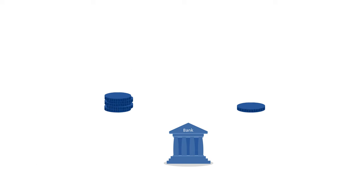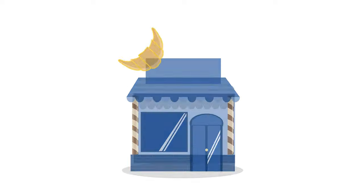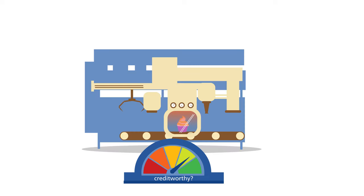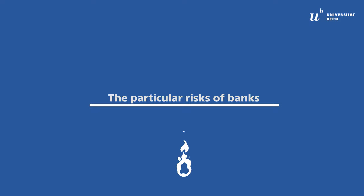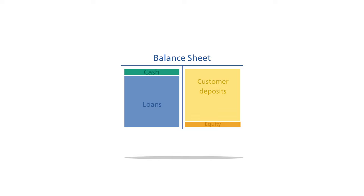The way a bank makes a profit is by paying lower interest rates to savers than the interest rate it charges for lending money. That is known as the interest rate spread and constitutes the foundation of basic banking. The interest rate spread compensates the bank for the costs involved with lending money, such as assessing the creditworthiness of borrowers and their projects. As the chart shows, two things are notably small on a bank balance sheet — and this is where the main risks lie: firstly, the low level of cash, and secondly, the low level of equity capital. The first leads to liquidity risk; the second, to solvency risk.